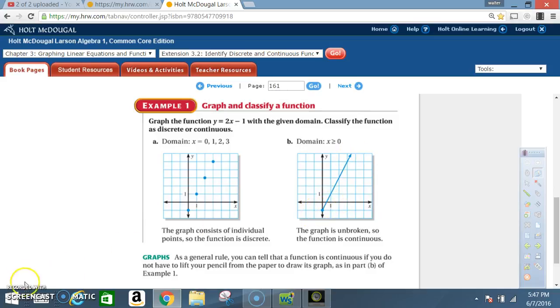Because x can be anything in this case, the graph is gonna be a solid line because every point counts. As a general rule, you can tell that a function is continuous if you do not have to lift your pencil from the paper to draw its graph, as in part B of example 1.